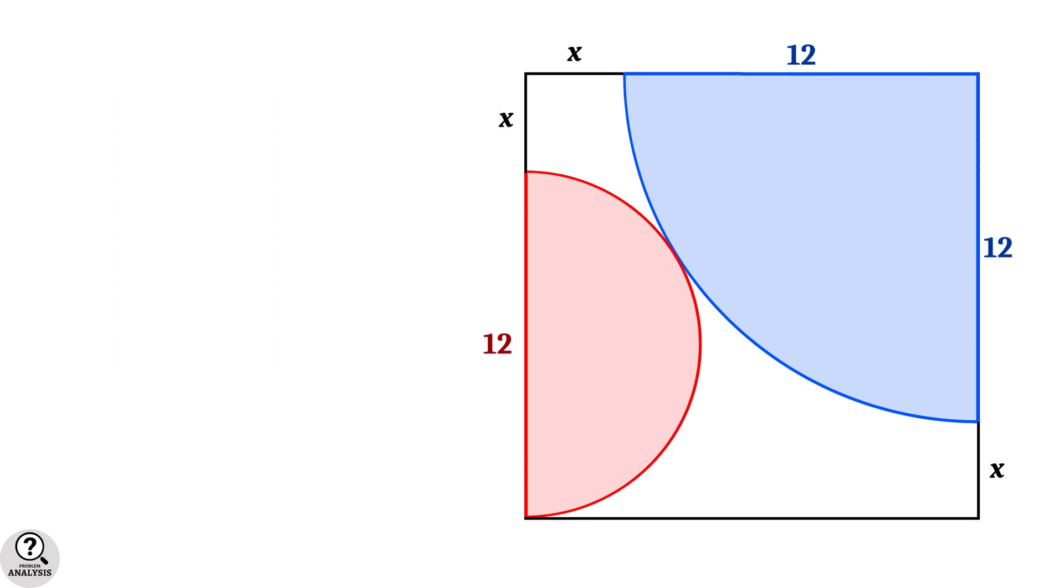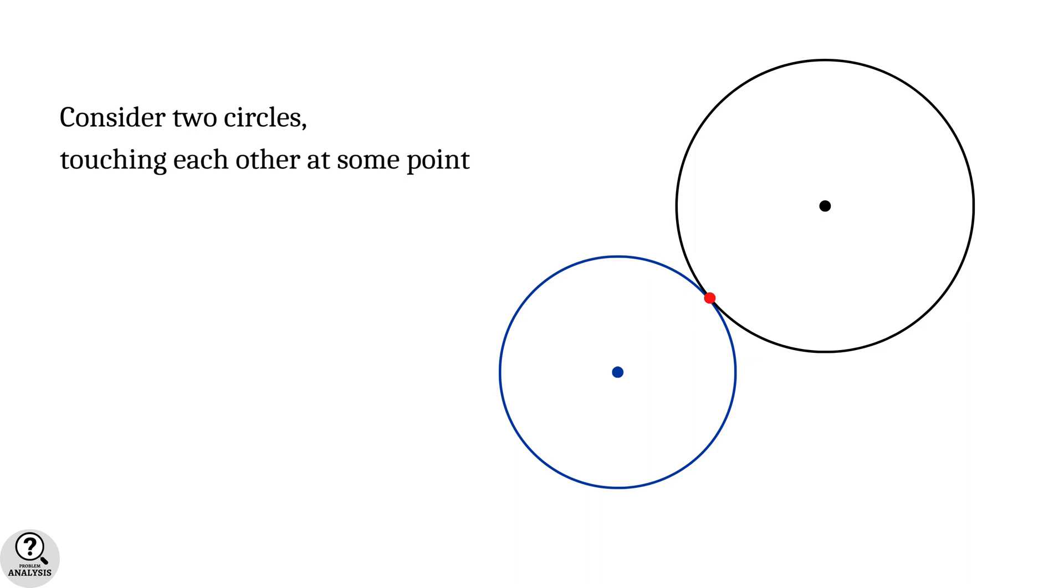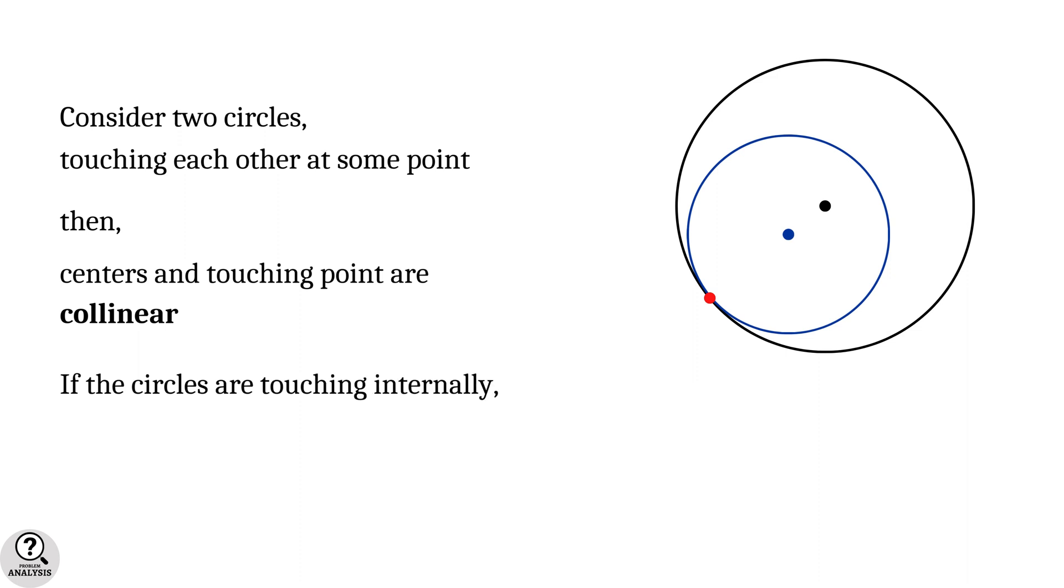Before moving forward, we have the semicircle and quarter circle as tangent circles. Check an important property of touching circles. Consider two circles touching each other at some point externally. The centers and touching point are collinear, lying on the same line. If the circles are touching internally, one circle inside the other, still the centers and touching point are collinear.